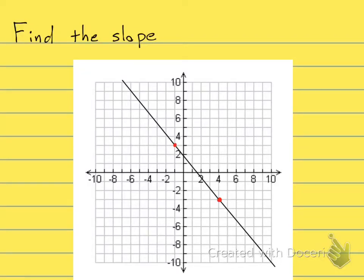They want us to find the slope of this line using these two points, and I'm going to use rise over run. So if I look at my rise from either point, it doesn't matter, you'll get the same answer.